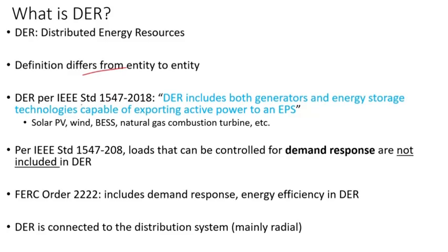DER in IEEE 1547-2018 includes both generators and energy storage technologies capable of exporting active power to an electric power system. For instance: solar, wind, battery energy storage systems, natural gas combustion turbines, etc. Per IEEE, demand response are not included in this definition.